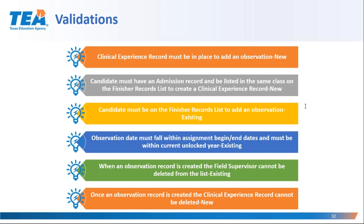The candidate must have a record on the finisher records list for you to upload an observation. This is existing functionality that should not be an issue because the admission record, created first in the process, will automatically create the 'other enrolled' record on the finisher records list. The observation date must fall within the assignment begin and end dates and must be within the unlocked reporting year — this is existing functionality that is not changing.